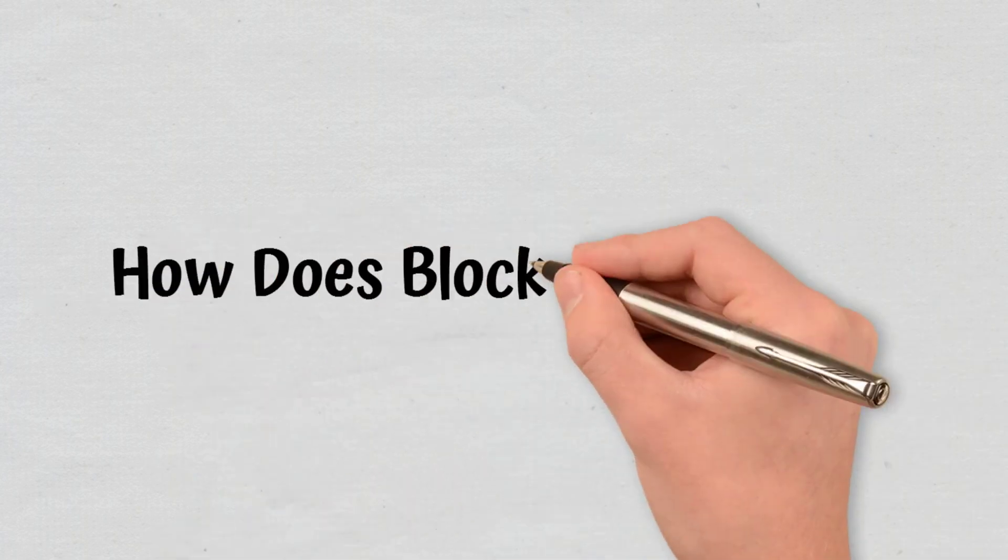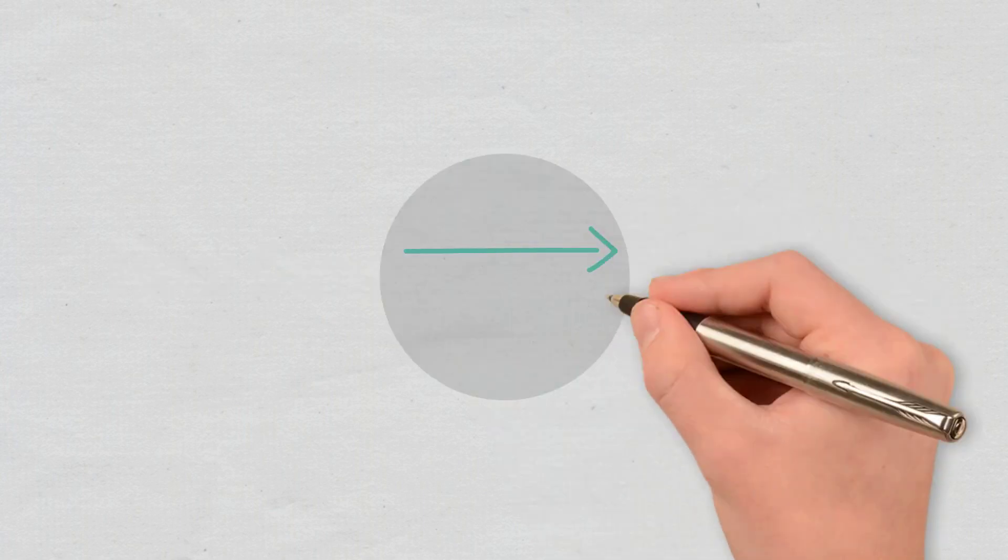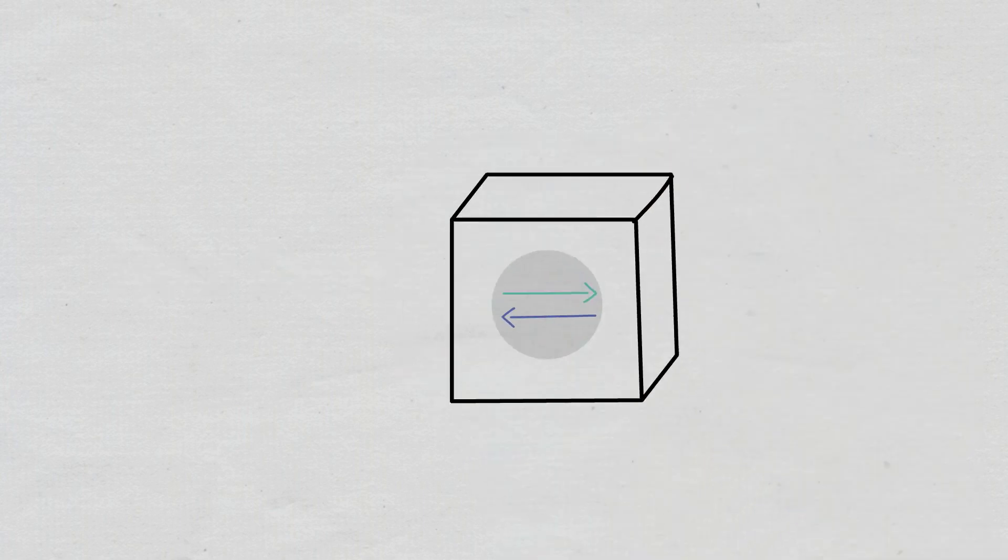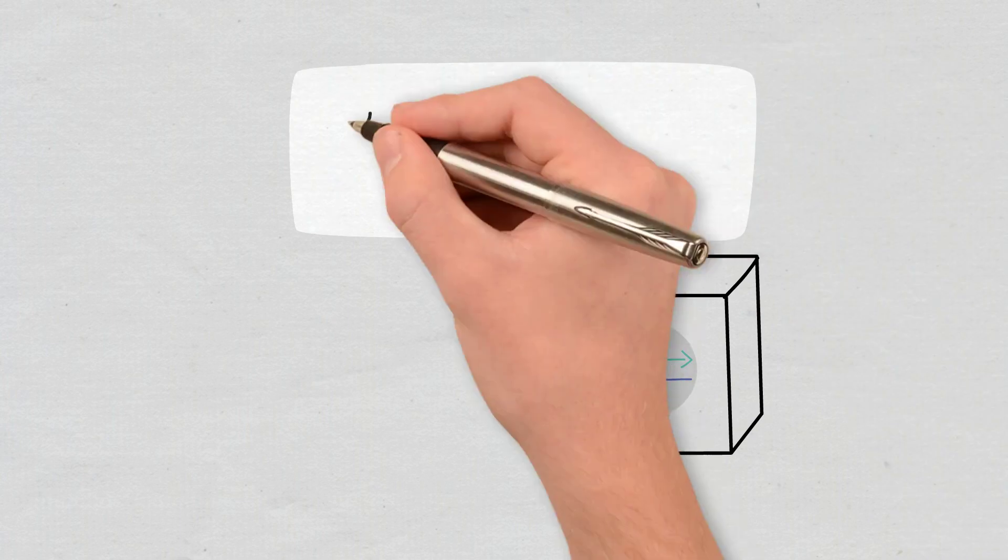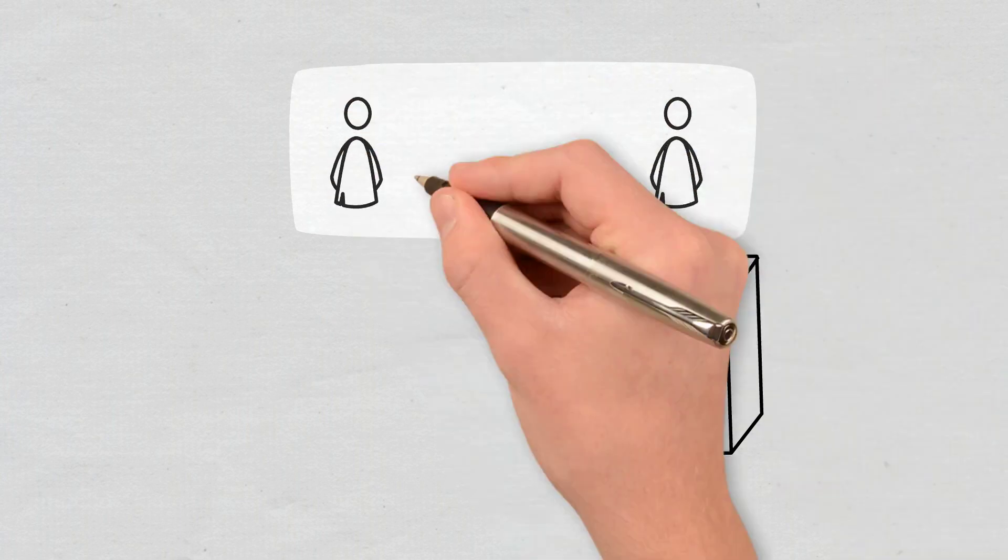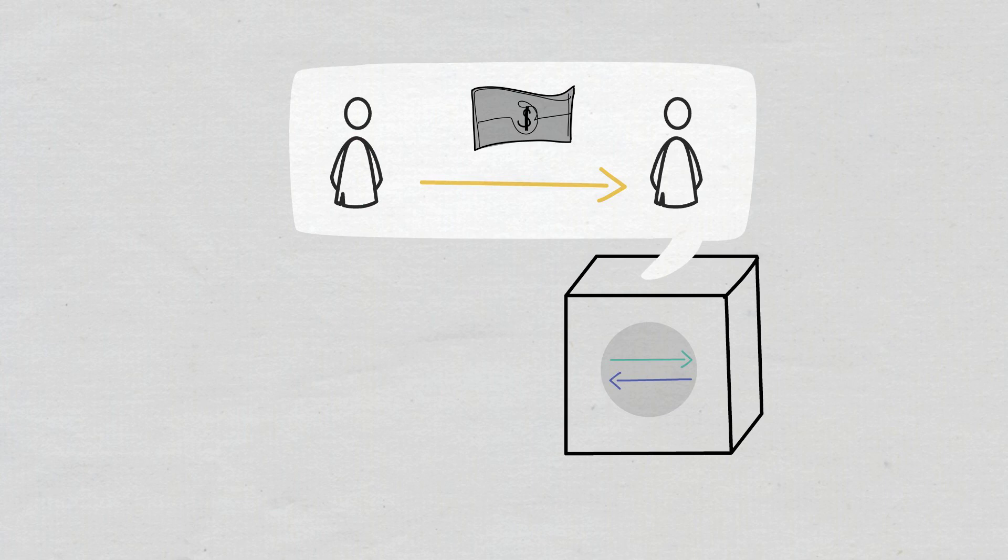How does blockchain work? When a transaction takes place, it is recorded as a block of data. Transactions show the movement of an asset, and the data block is able to record the information that interests you, such as who, what, when, and how much.